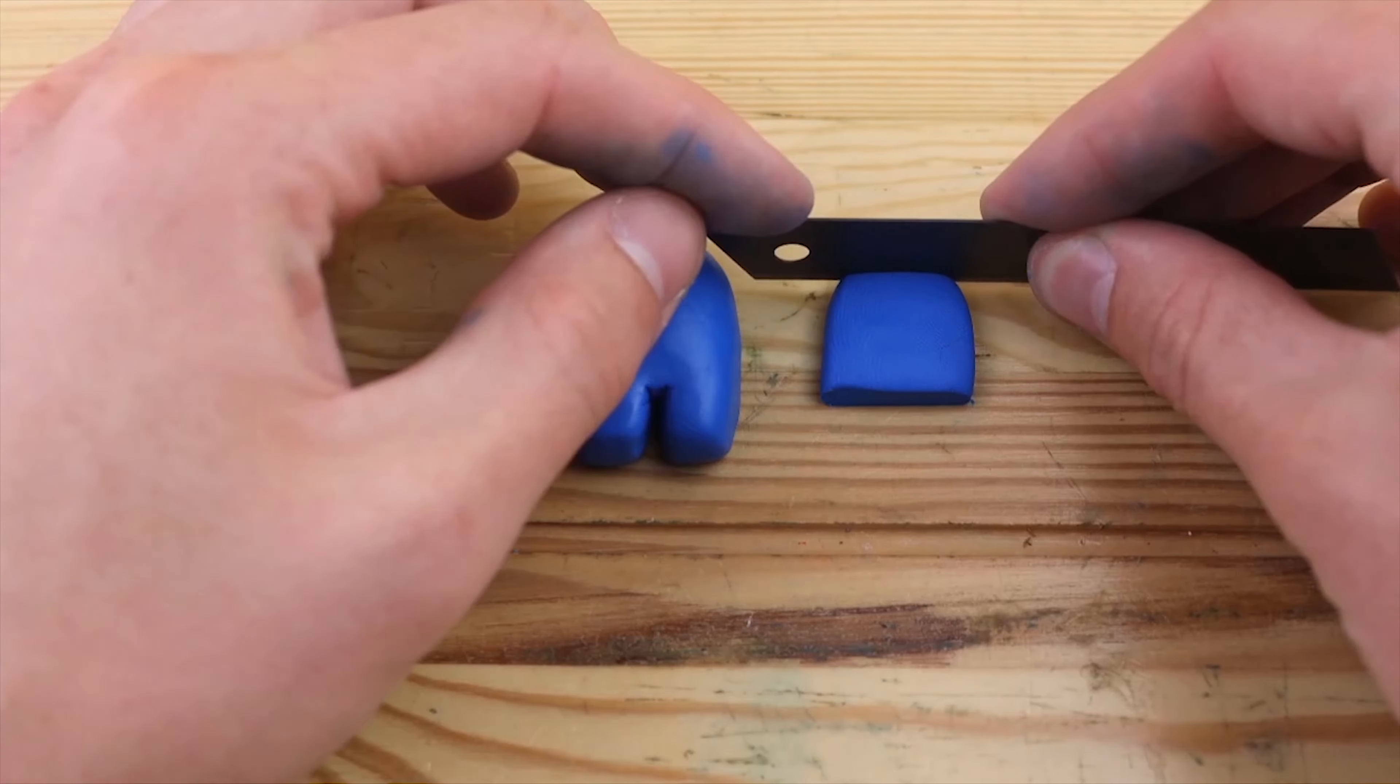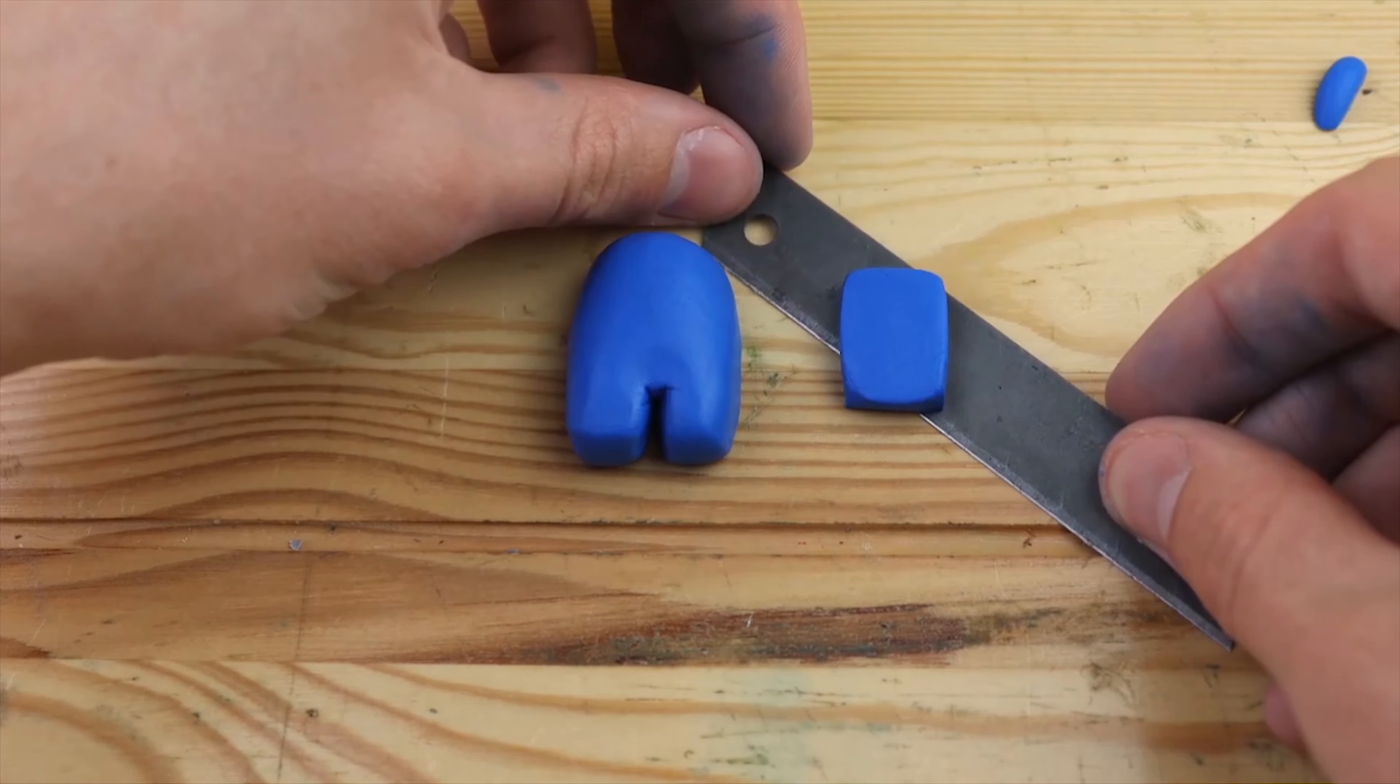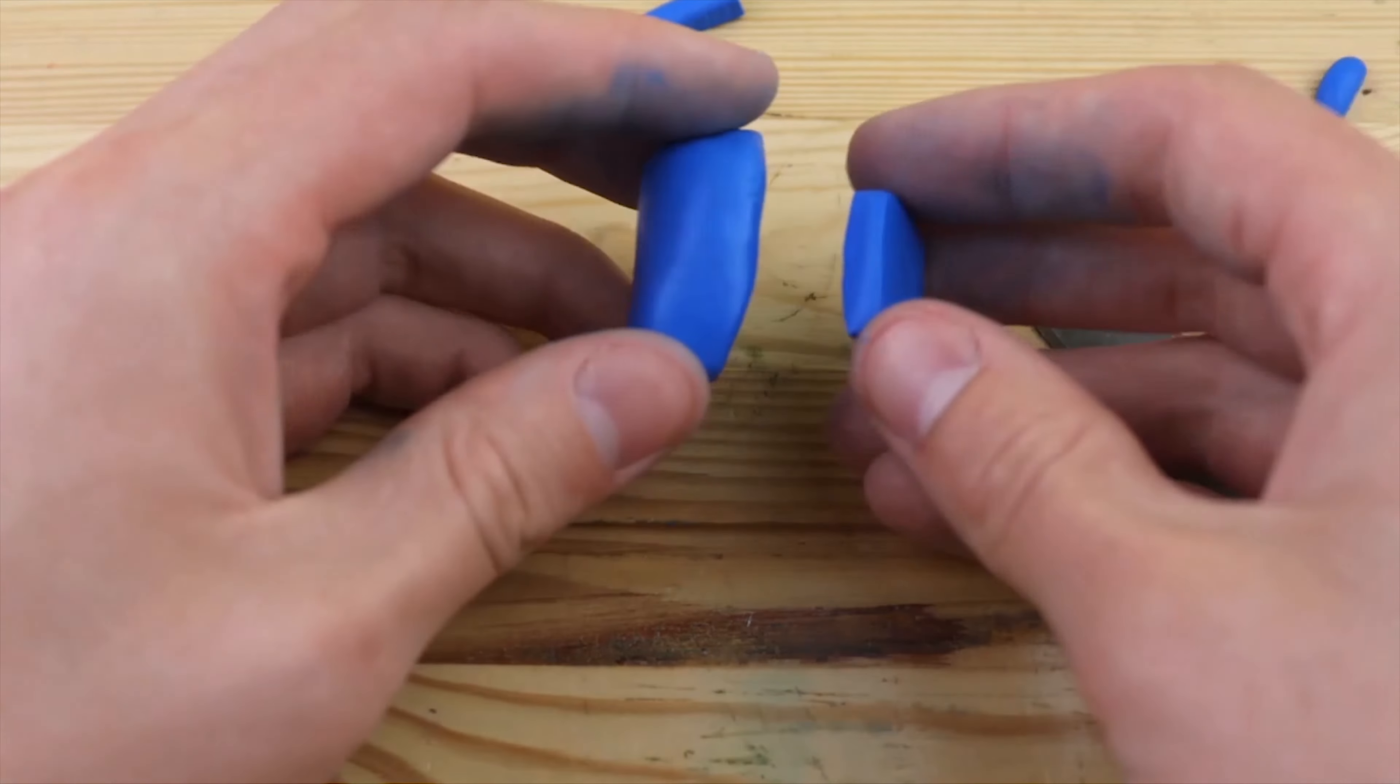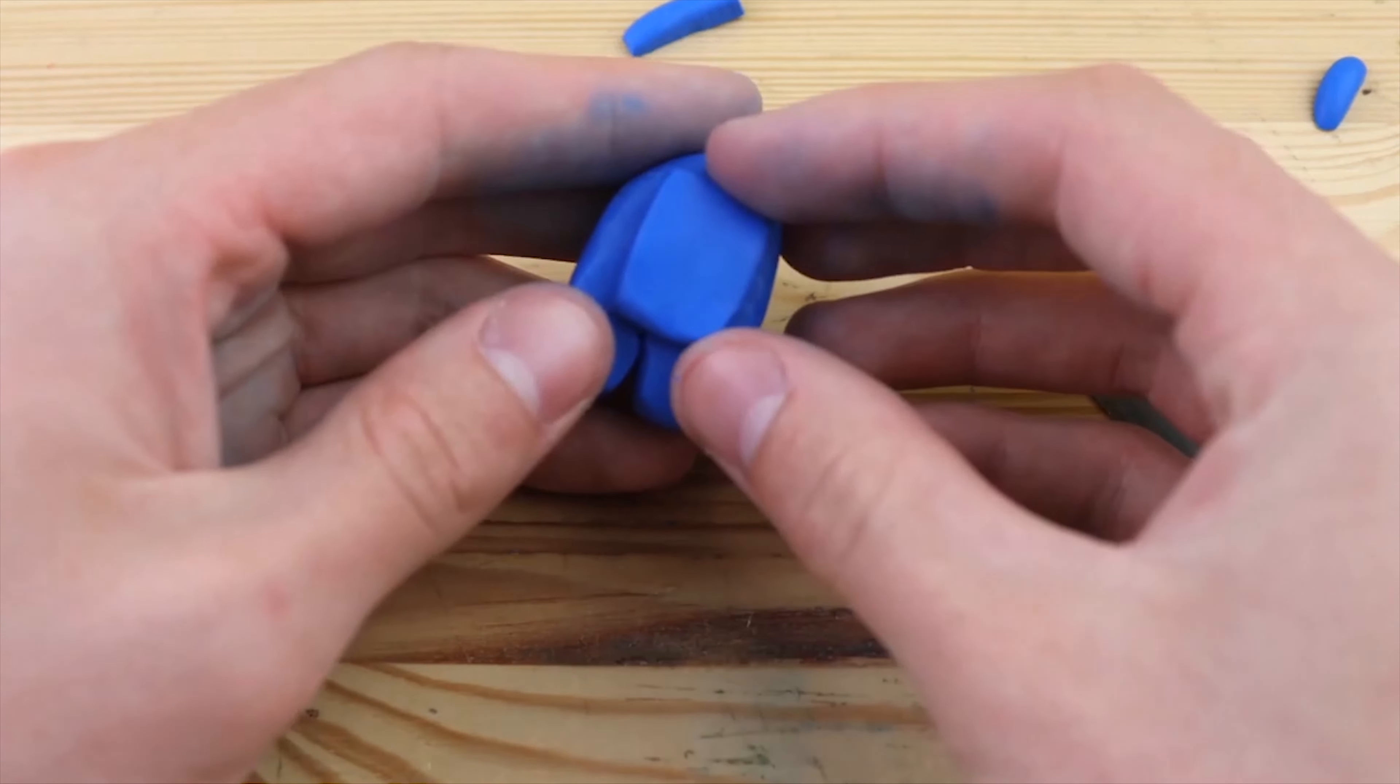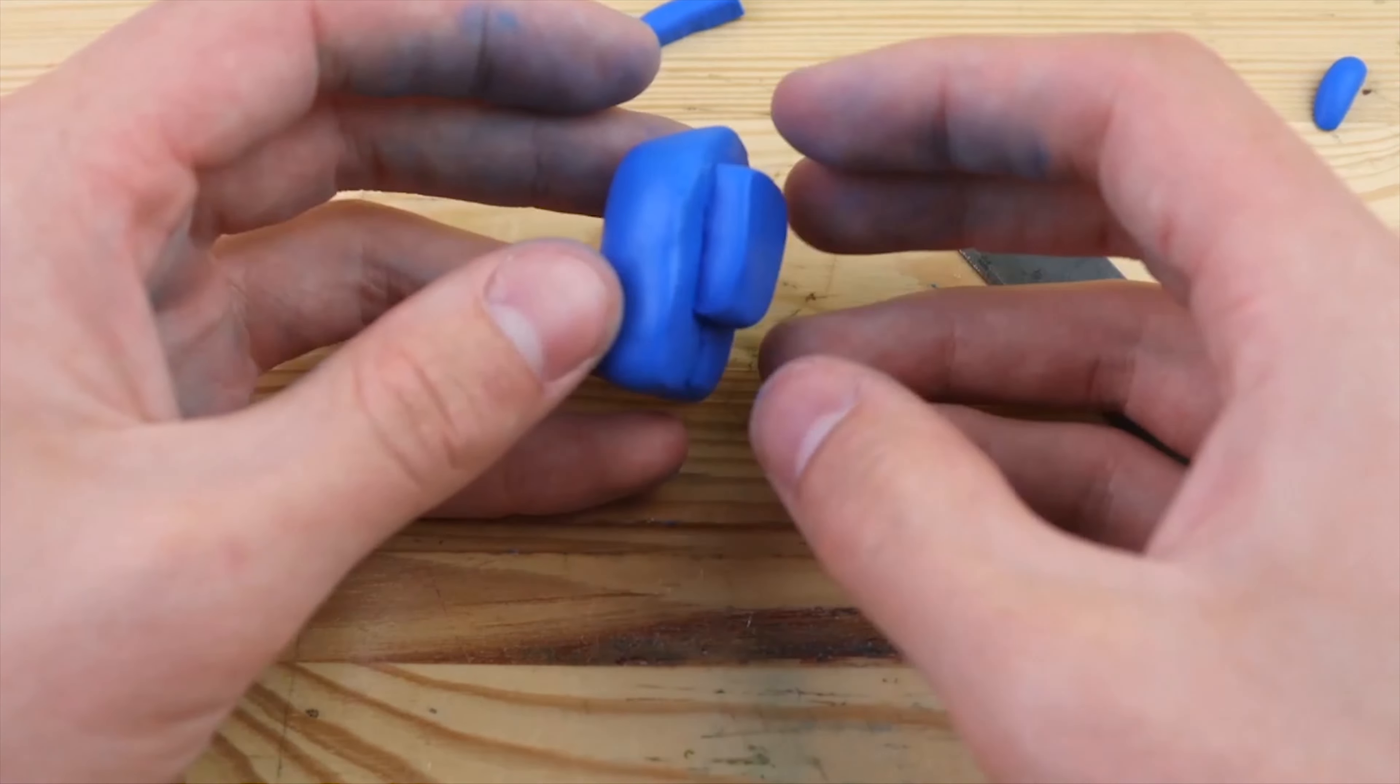Now on the back we need to create the oxygen tank and place that onto the back. The back looks a little bit messy, but it's the front of the character that matters.